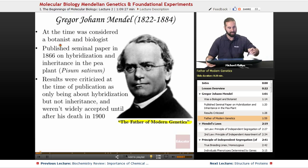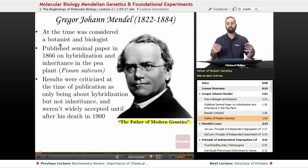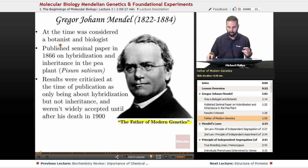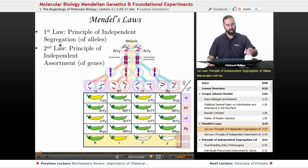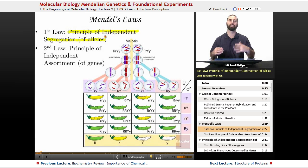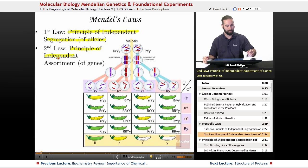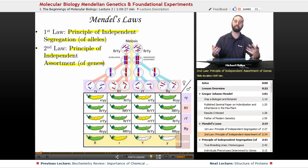Mendel did all of this work while being an Augustinian friar — he was a monk and this was research he did on the side. Now let's talk about Mendel's laws. He made two very important laws based on his research. First, he showed the principle of independent segregation, which is about alleles. His second law is the principle of independent assortment, which speaks toward genes.